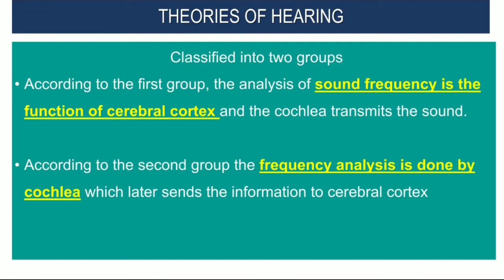Now, theories of hearing. They are classified into two groups. According to the first group, the analysis of sound frequency is the function of the cerebral cortex. The second group suggests that frequency analysis is done in the cochlea.